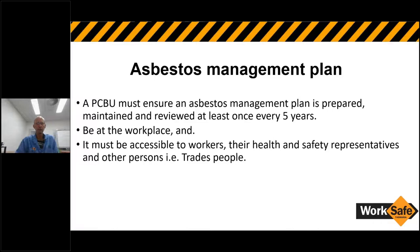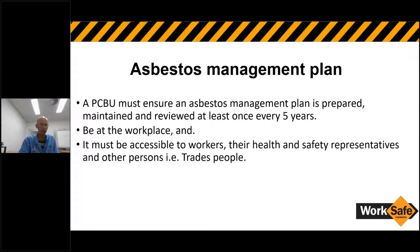The PCBU must also ensure there's a management plan prepared, maintained, and reviewed at least every five years. Once you've identified where all the asbestos is within your building, you've got to come up with a management plan. That plan must be accessible to workers, health and safety representatives, and to other people — like tradies coming in to do electrical work or renovations. You must give the management plan and register to those trades people.